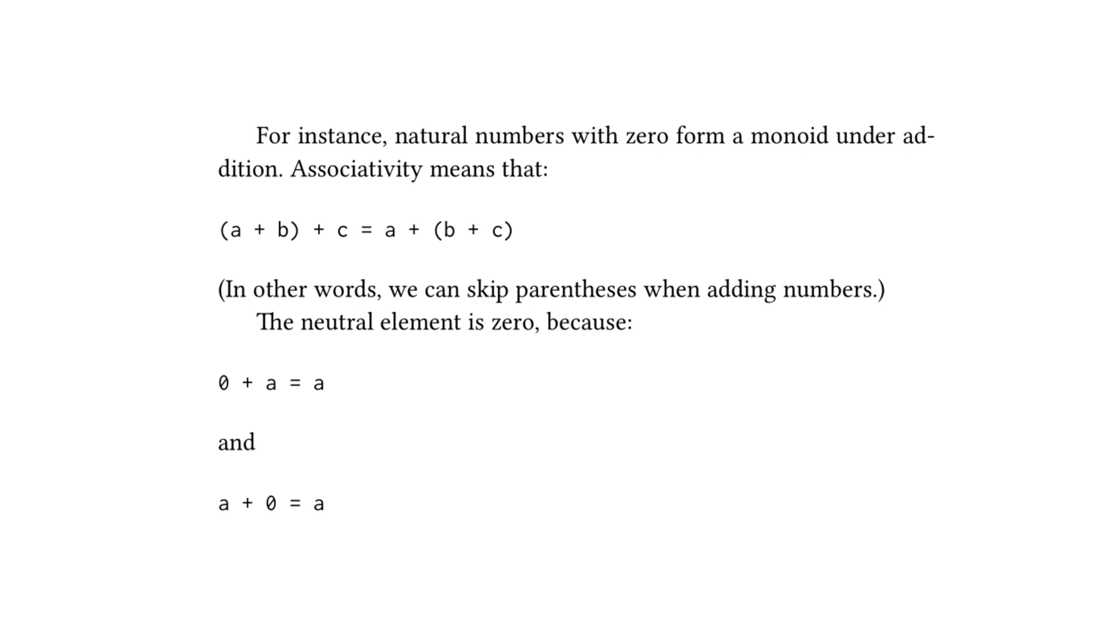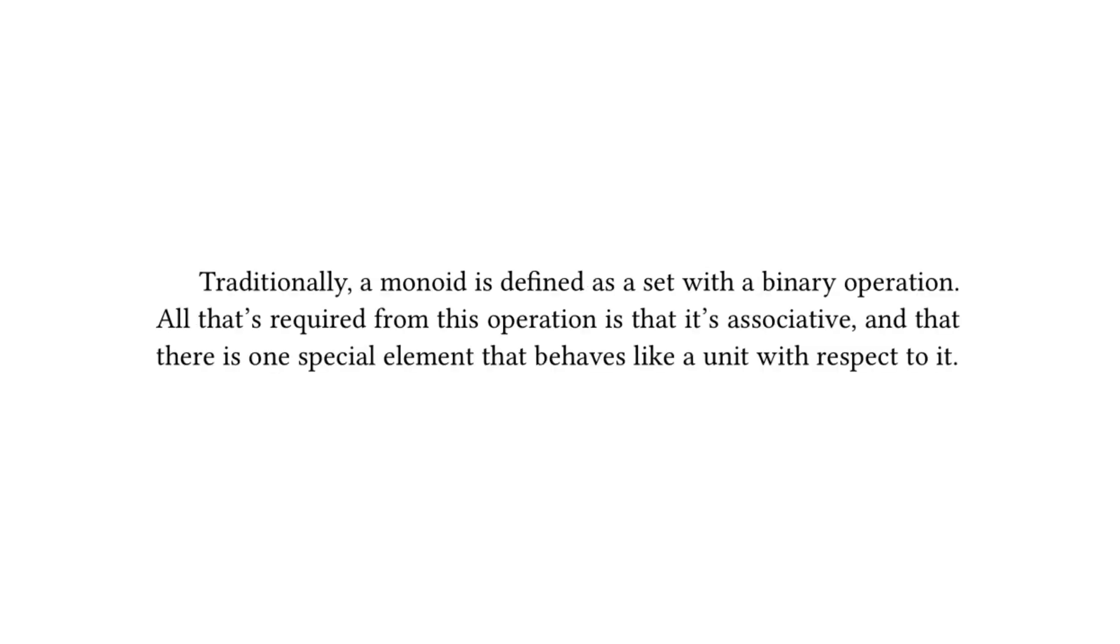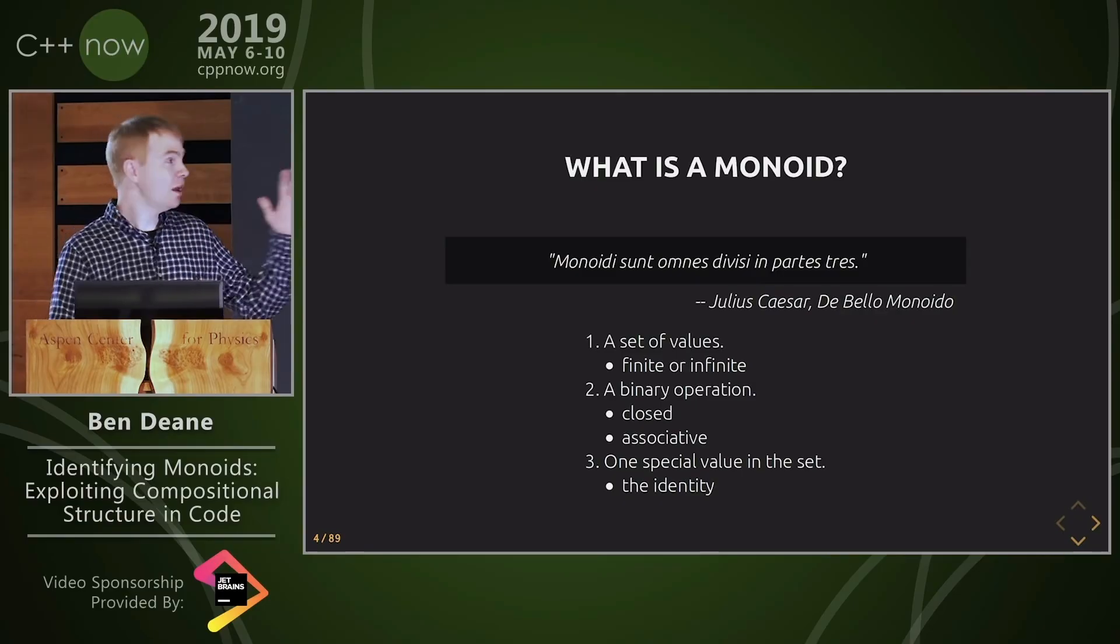And they mentioned that because addition is commutative, you can technically omit one of these additions. But yeah, this is the book's explanation of a monoid. I personally don't think that this is a fantastic explanation, because implicitly here, it's basically stating three criteria, a set of values, aka a type, a binary operation, and an identity element, which they call one special element that behaves like a unit with respect to it. So now what we are going to do is we are going to look at two different clips, one from Ben Dean's C++ Now 2019 talk, Identifying Monoids, and another from David Sankel's CppCon 2020 talk entitled Monoids, Monads, and Applicative Functors. And I think these two explanations are not only fantastic, but in one of the cases, extremely entertaining.